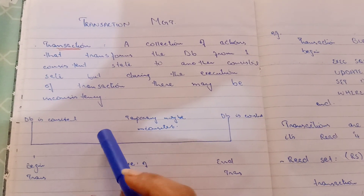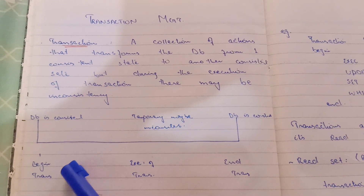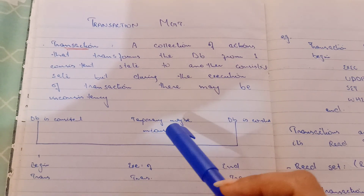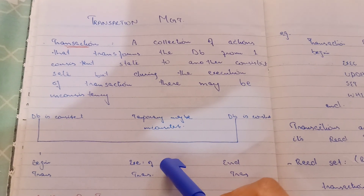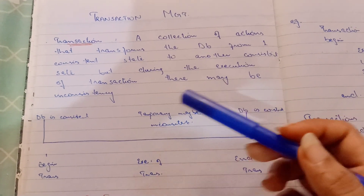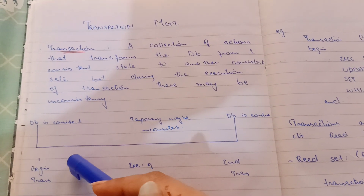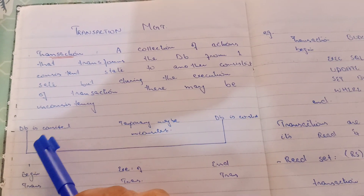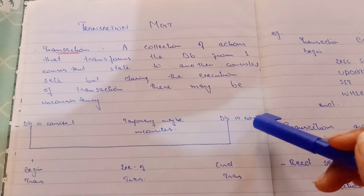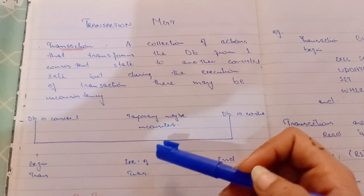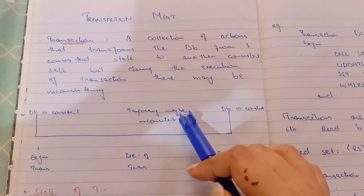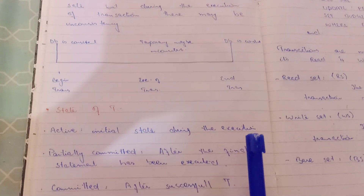Here you can see, for example, we have started a transaction. The transaction has started, which we have given the name 'begin transaction'. When the transaction is done, you give it the name of the end of the transaction. When your transaction starts, your database is in a consistent state, and when your transaction is finished, it is also in a consistent state. But when your transaction is in execution, your data may be in an inconsistent state.